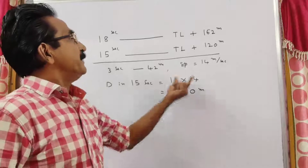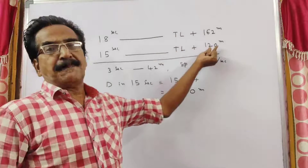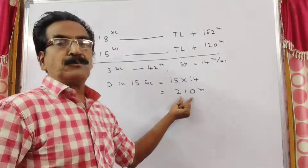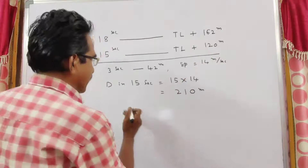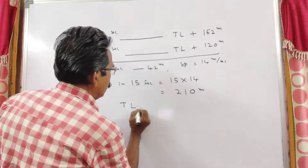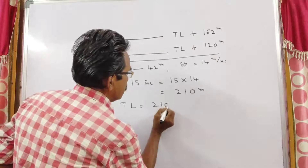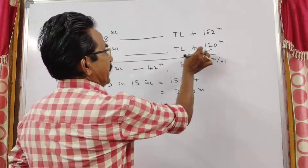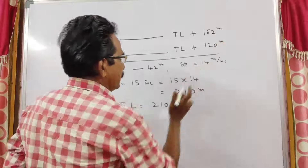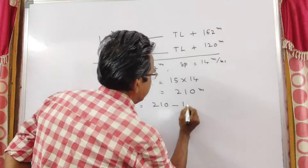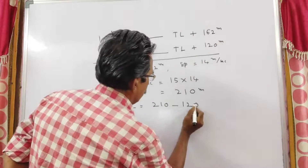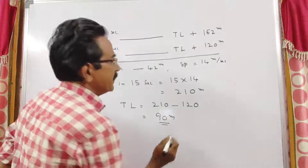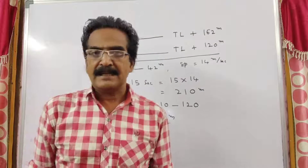This 210 meters is equal to train length plus platform length. So train length is equal to 210 minus 120, that is equal to 90 meters is the length of the train.